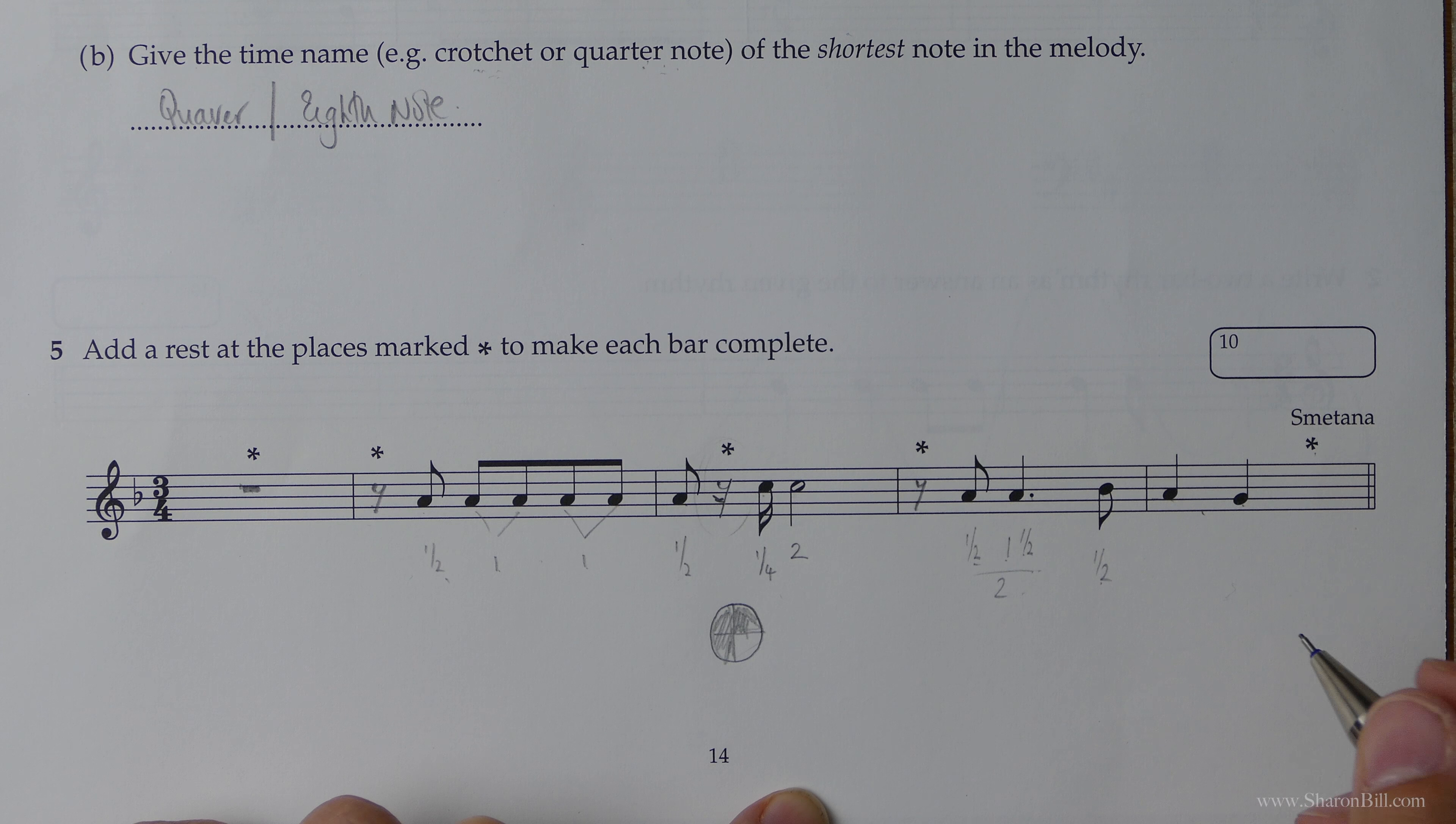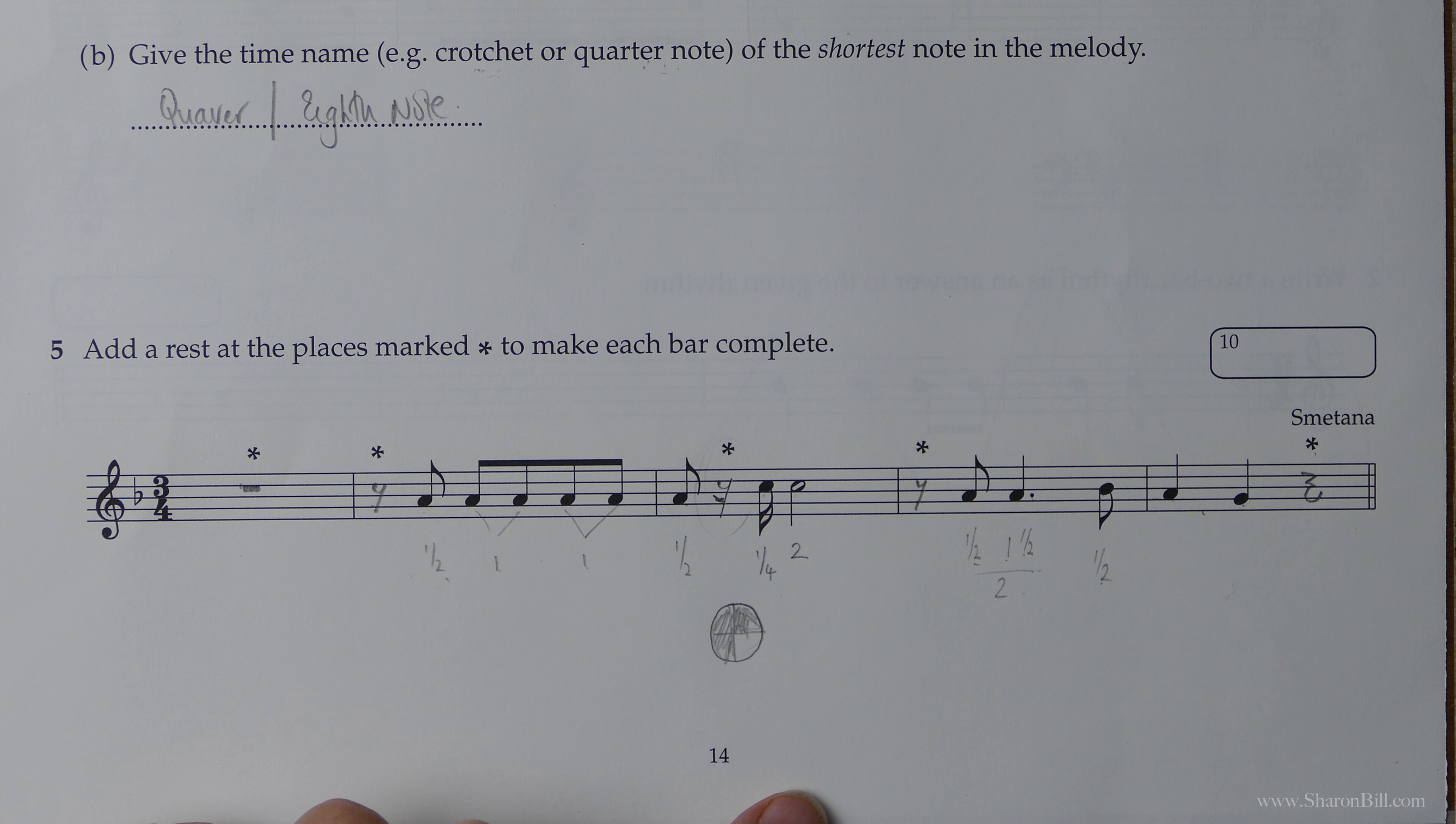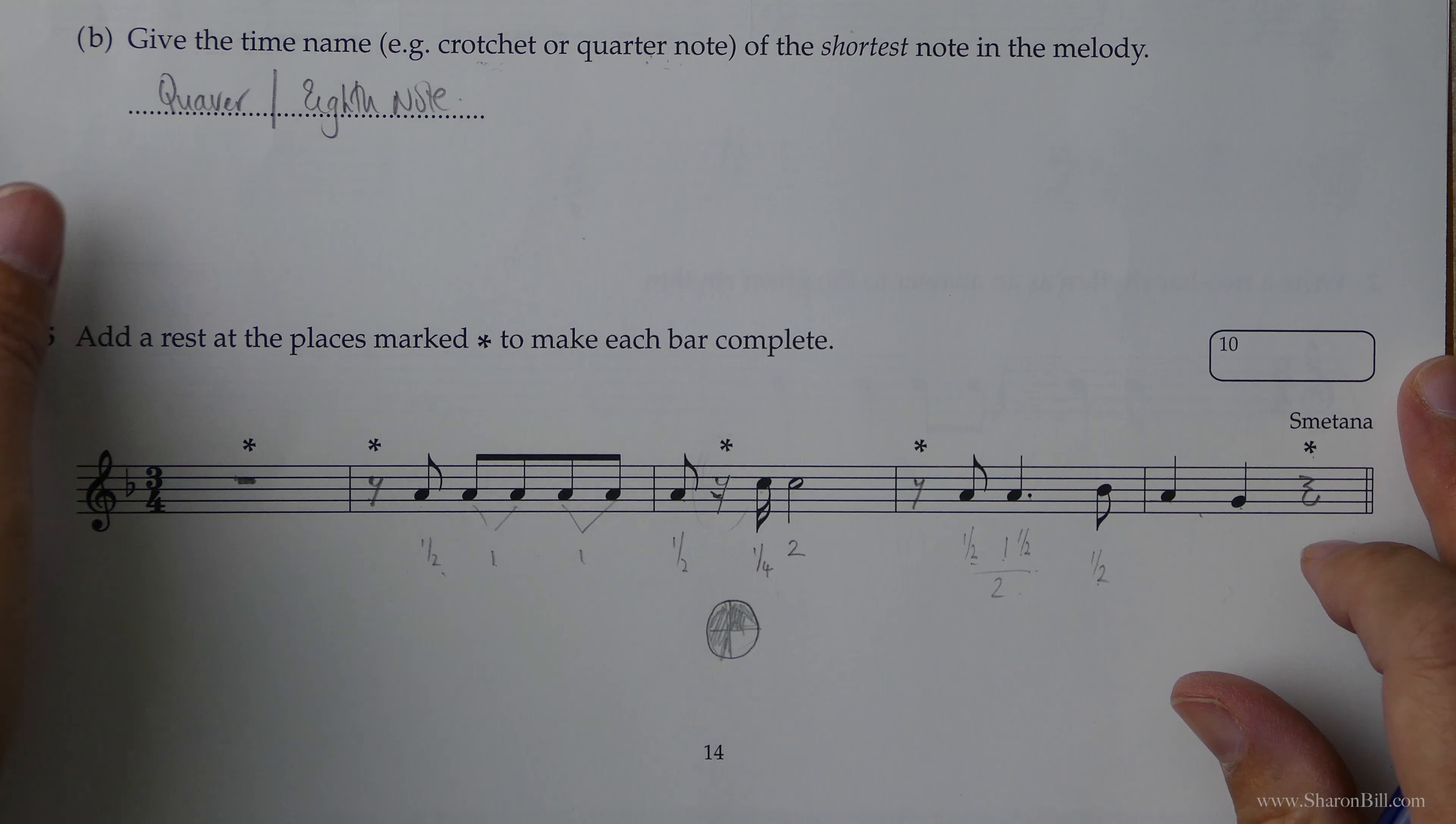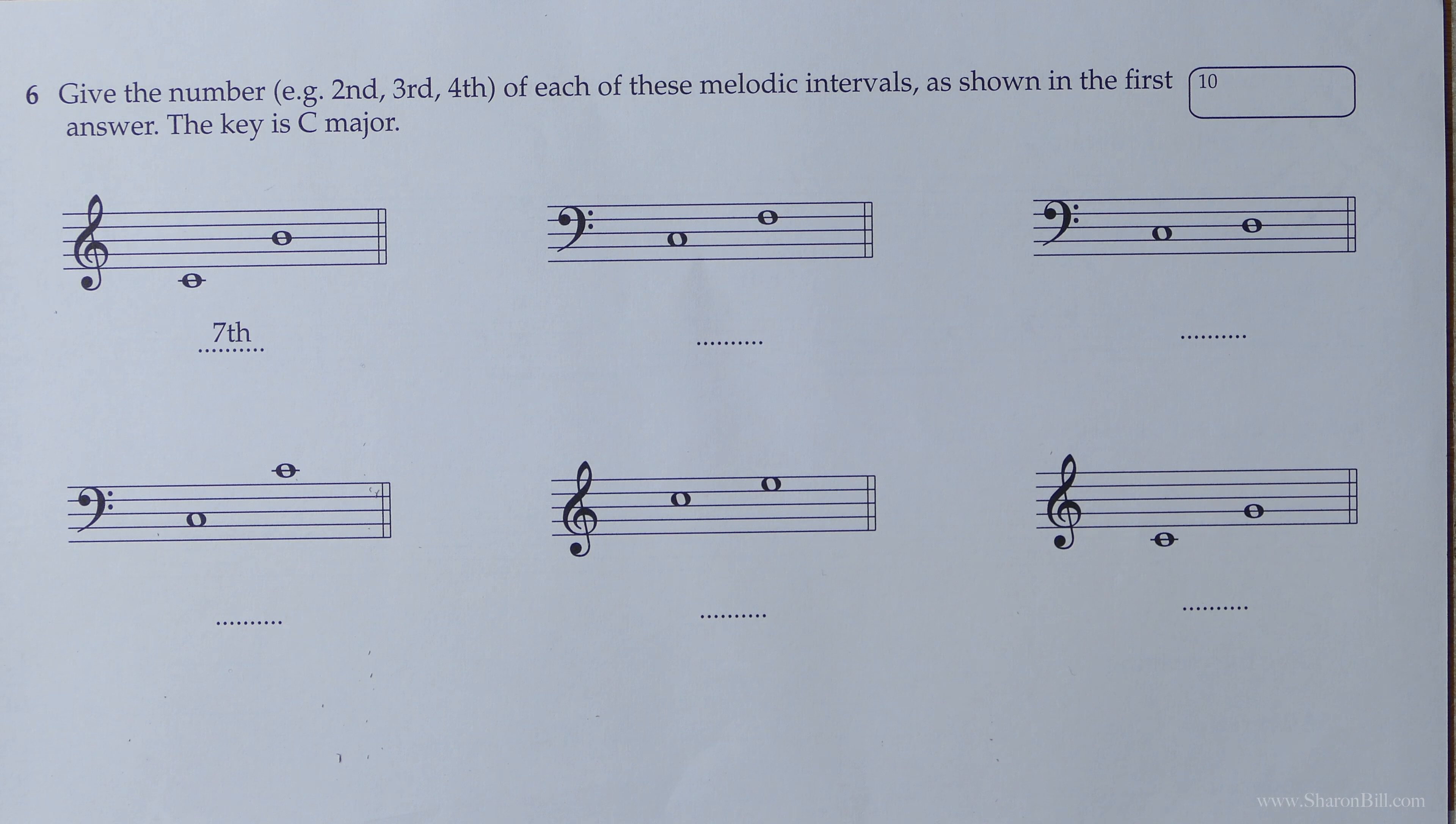And this last bar doesn't look too bad maths-wise. We've got a one beat and a one beat. That makes one, two. And we should have three, so we're one beat missing. And so we need our crotchet or quarter note rest, which looks like that. There we go. That's that question soon completed. Let's move on to the next question over the page.